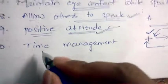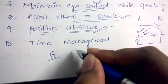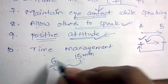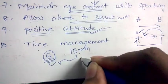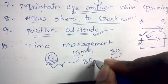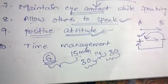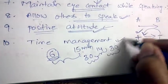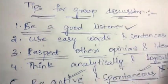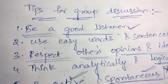Time management: if there are six people in a group discussion and the total time is 15 minutes, equally divide the time among all six people. Make sure the first 30 seconds and last 30 seconds are reserved for initiation and conclusion. The remaining 14 minutes should be equally divided among all participants. The evaluator will not extend the time, so always conclude the topic within the given time.